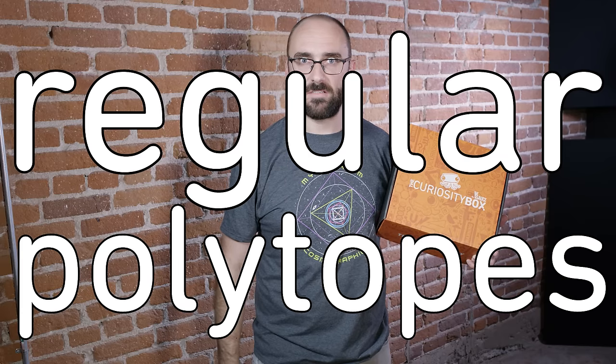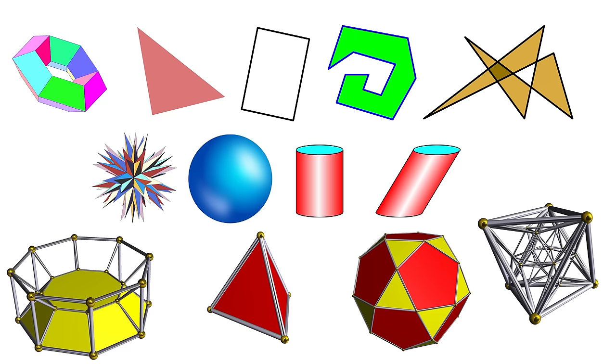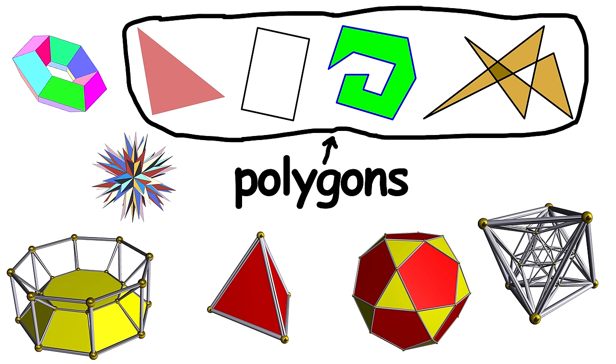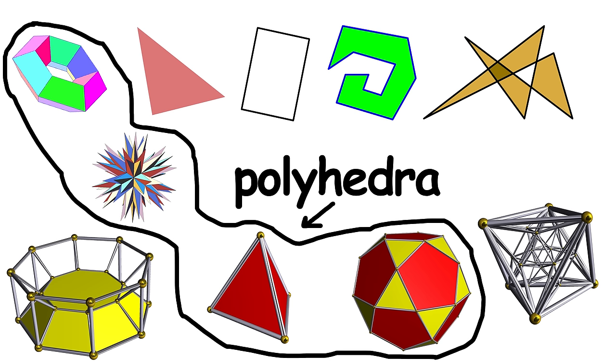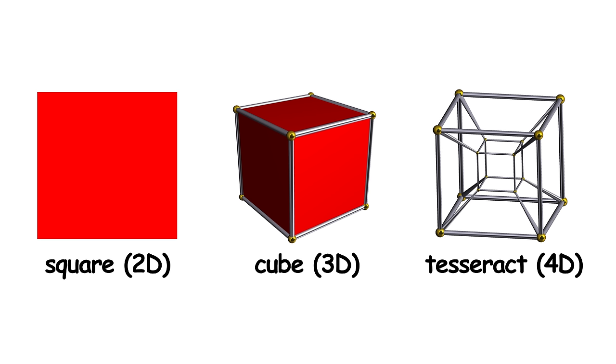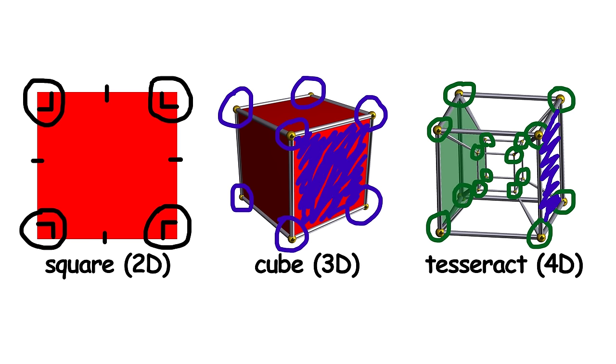A polytope is a shape with straight or flat sides. In two dimensions, we call them polygons. In three dimensions, we call them polyhedra. But polytope is the general term that encompasses all of them. A polytope is regular if all of its elements are alike. For instance, side lengths, angles, vertices, faces, cells.